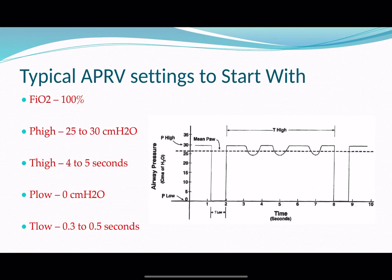To show typical settings: T-low is usually between 0.3 and 0.5 seconds. For patients with obstructive disease, you can go up to 0.7 and very rarely up to one second. It's useful to know these general ranges so that you can verify your calculation is roughly correct.